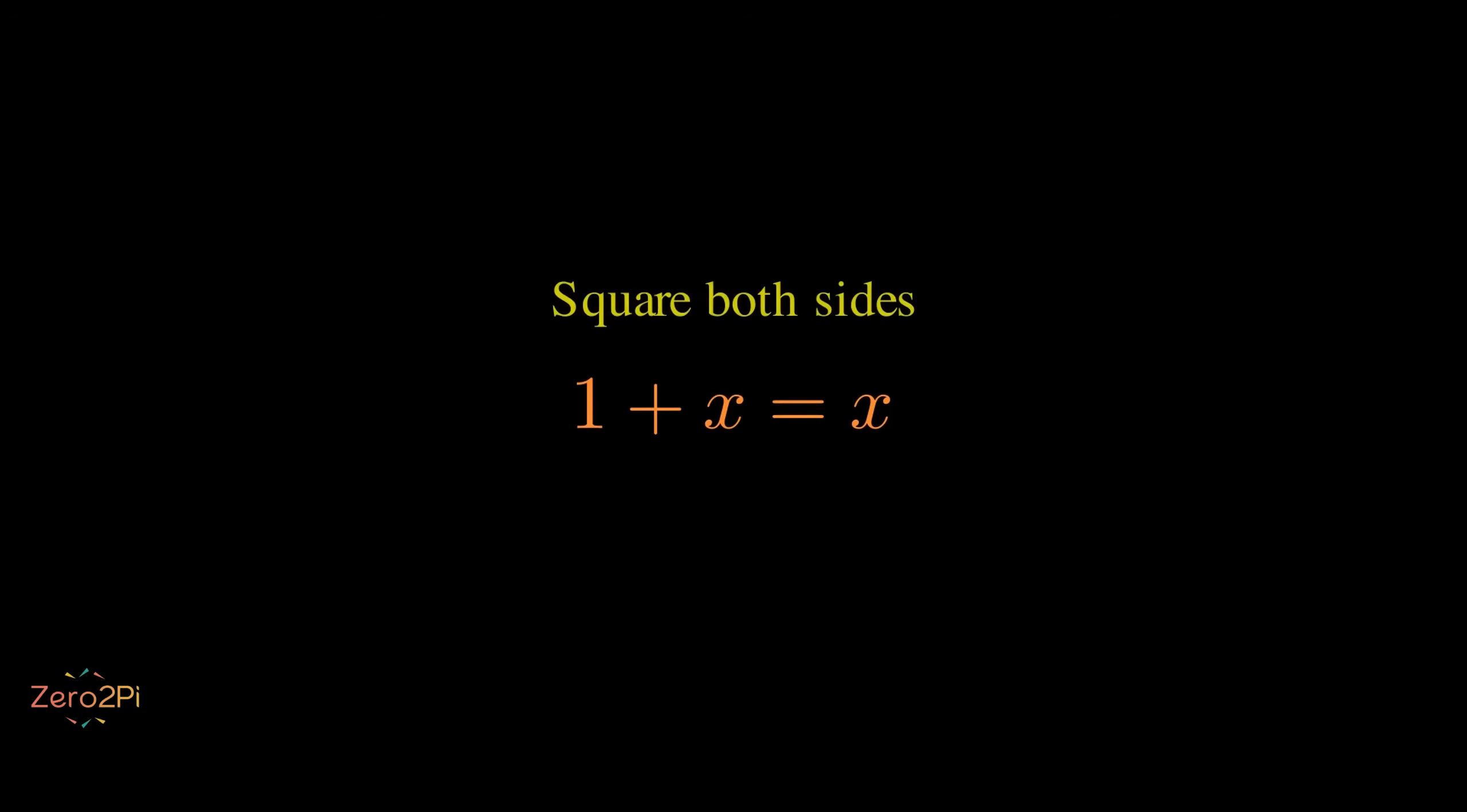Some might try a clever trick. What if we square both sides? This gives us 1 plus 2x plus x squared equals x squared. Subtracting x squared from both sides, eventually we get x equals negative 1 half. What? Is this the solution?